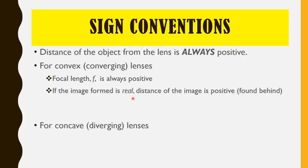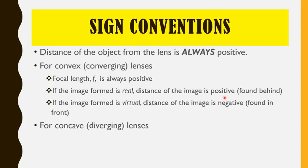If the image is real, the DI, or the distance of the image, is measured positively, because they are found and formed behind the lens. If the image formed is a virtual one, the distance of the image is negative, found in front. Comparing it with our spherical mirrors, they also have the same signs, but remember: real images for lenses are found and formed behind the lens, and virtual images are found and formed in front of the lens.